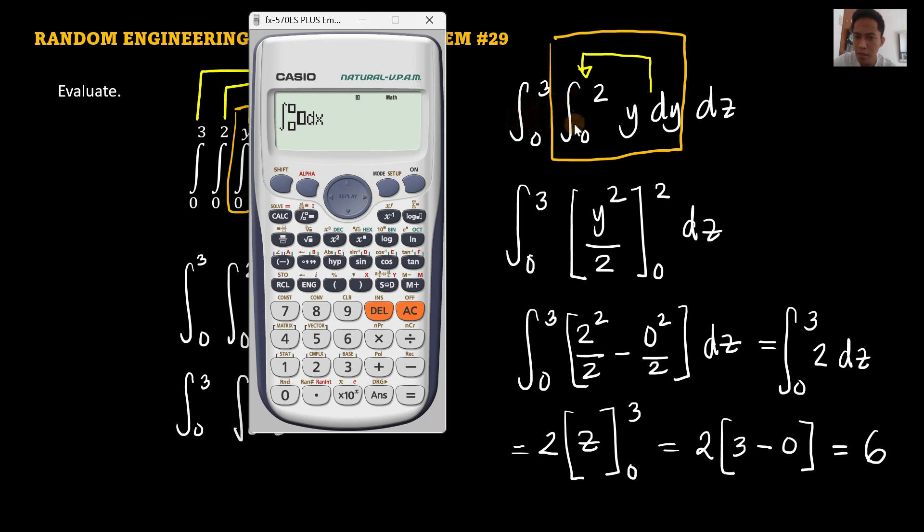Integral. When it's a double integral, you place one integral on each side. And then, inner to outer still. In this case, that is y dy. In our calculator, the default variable is x. So even though it's y dy, we just put x. The counterpart is x dx. Same thing for dz. For dz, we put dx as well, as long as your sequence is from inner to outer. That is y dy. In our calculator, that is x dx.